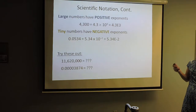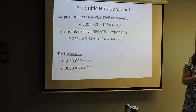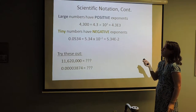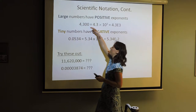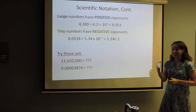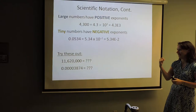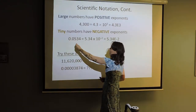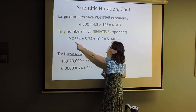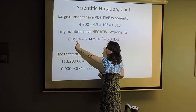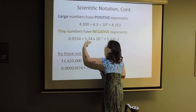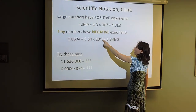When do we have a negative exponent versus a positive exponent? If it's a large number, we have a positive exponent because we're moving the decimal to the left. If it's a small number — less than 1 — we're going to have a negative exponent; we're moving the decimal to the right. So if you have 0.0534, the decimal needs to go between the 5 and 3, moving it two places — that's why it's a negative exponent.